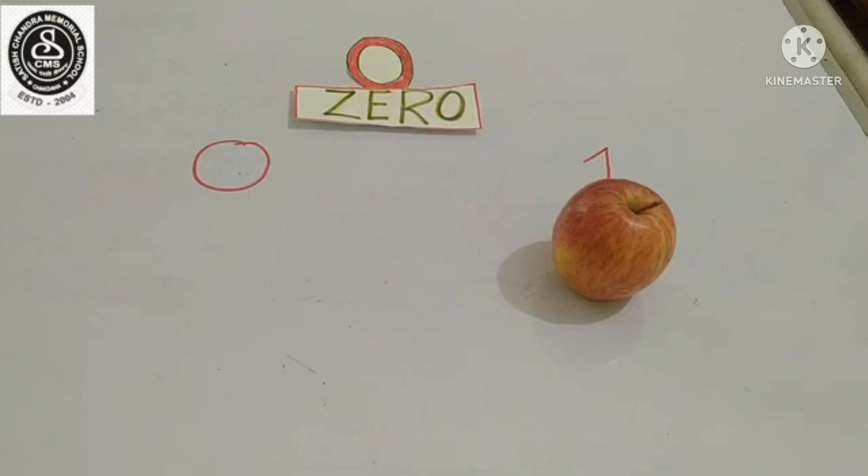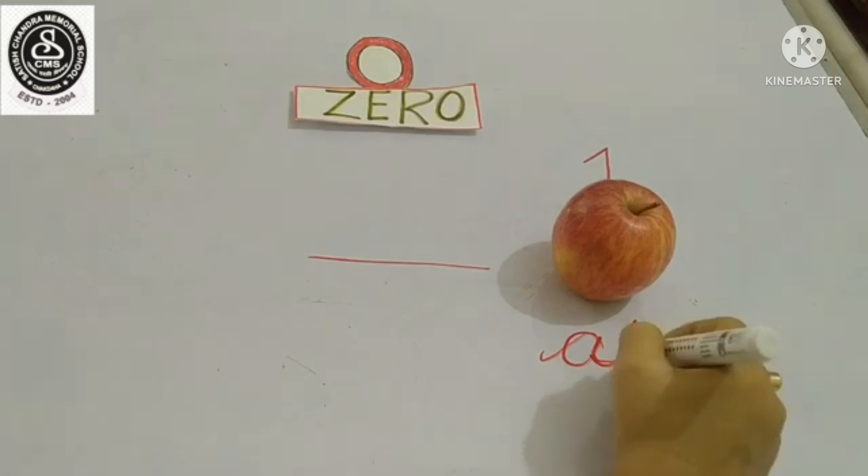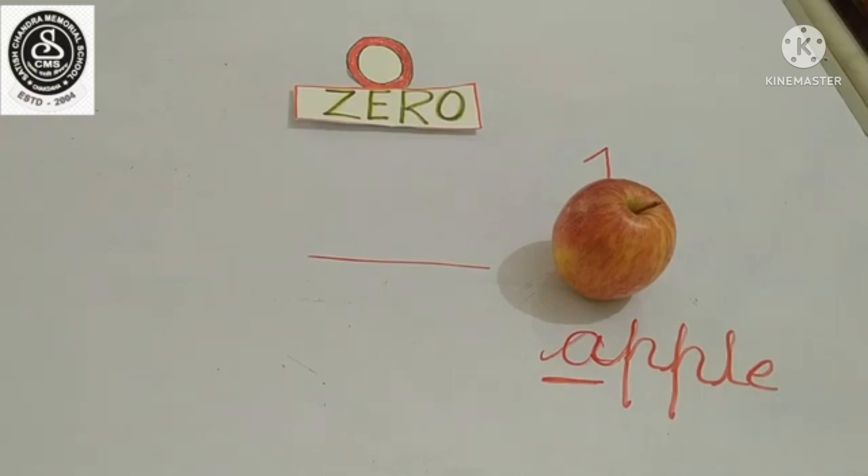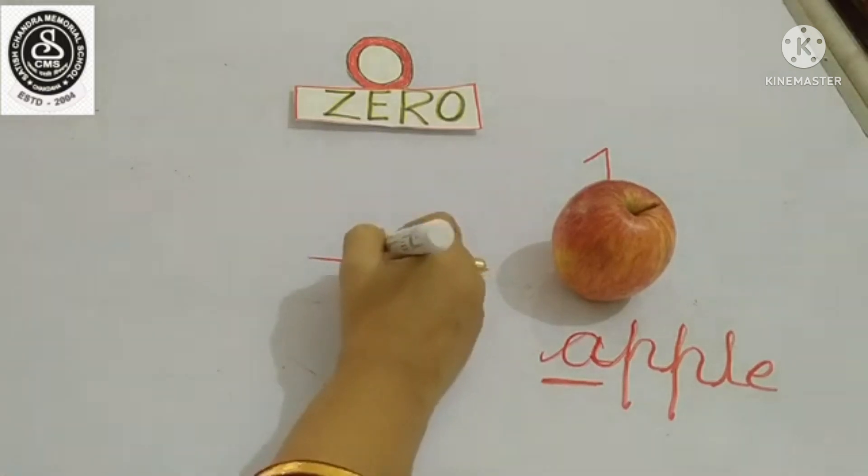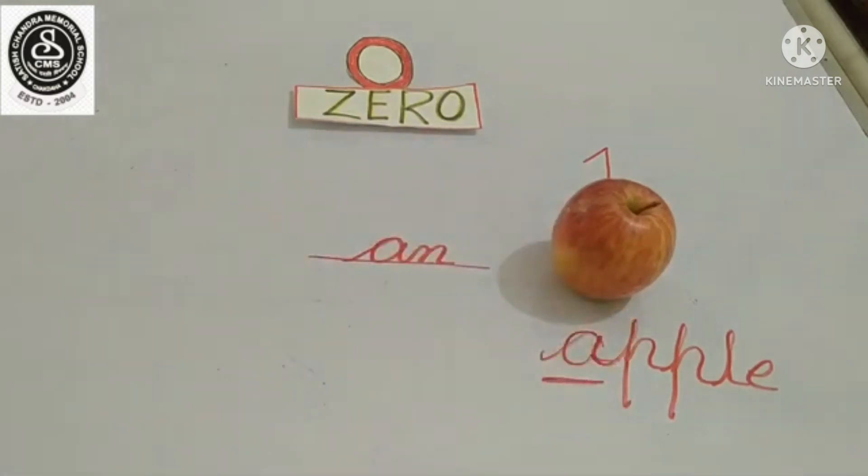From here, you can learn English also. Already, you have learned vowel and consonant. So, here, one apple is there. Can you tell me, before apple, what should I write? A apple or an apple? What is the spelling of apple? A-P-P-L-E. So, A is a vowel or consonant? Yes, you are right. A is a vowel. So, before vowel, we should write an. An apple.